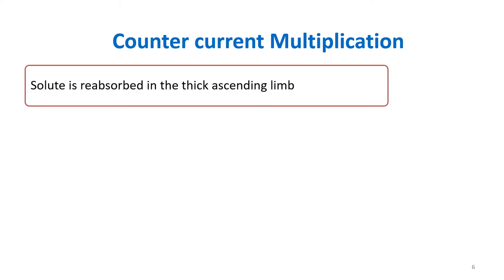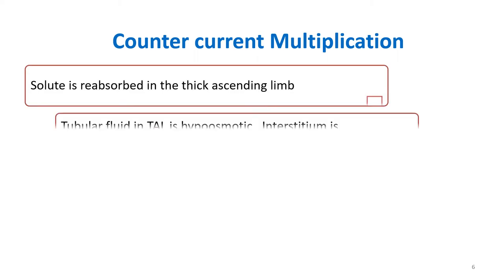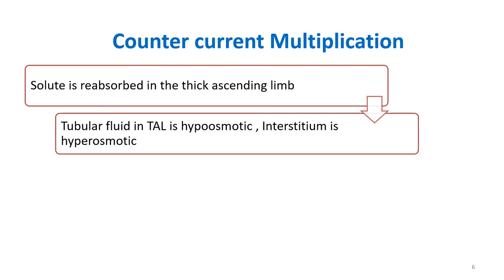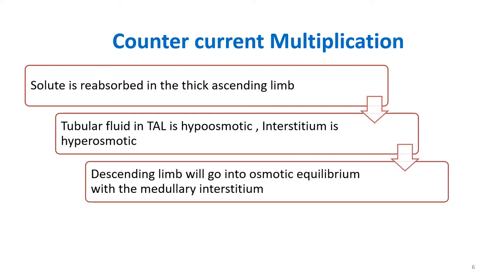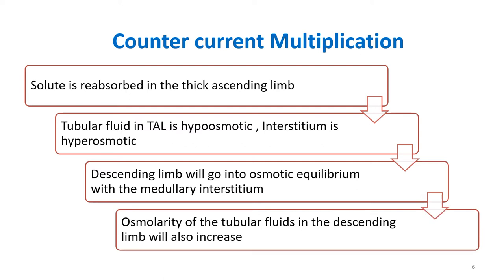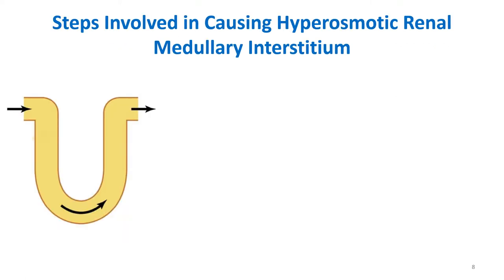Countercurrent multiplication begins at the thick ascending limb. The solute is reabsorbed in the thick ascending limb, so the tubular fluid there becomes hypo-osmotic because solutes are being lost, while the interstitium becomes hyperosmotic. The descending limb will then go into osmotic equilibrium with the medullary interstitium, so osmolarity of the tubular fluid in the descending limb will also increase. To illustrate: suppose all areas of the loop of Henle contain fluid of the same osmolarity — say 300 — in the thin descending limb, thick ascending limb, and interstitium.